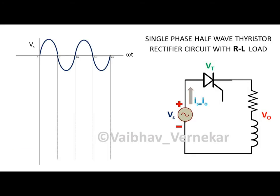The applied input AC waveform is depicted as Vs by a sine wave. In the positive half cycle, the anode is forward biased, so one condition is satisfied. Till the gate voltage is not applied, the thyristor is off and so it blocks the current in the circuit. As gate voltage is applied, both the criteria are satisfied and hence the thyristor is turned on and it starts conducting.